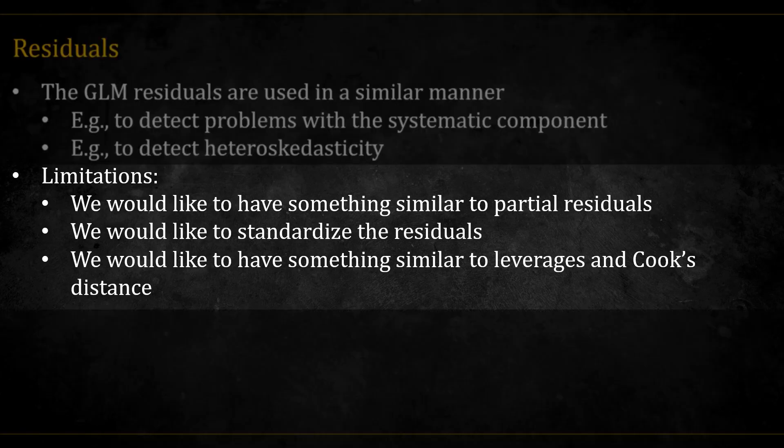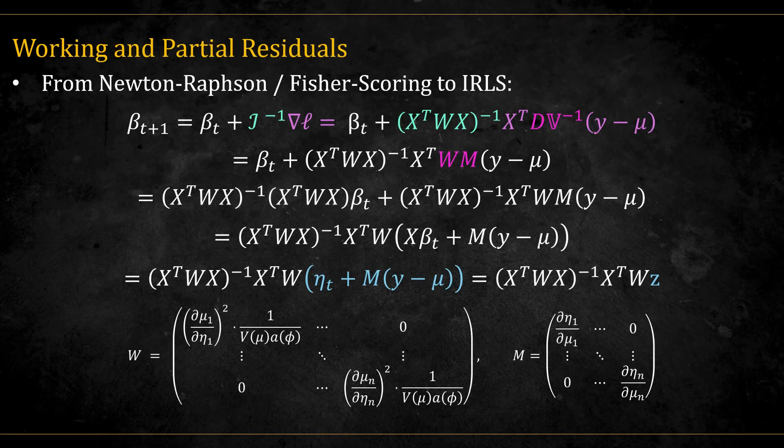So far, we don't really have a way to calculate partial residuals. We would also like to standardize the residuals, and we would like to have something similar to leverages and Cook's distance. For all of this and more, we need to adopt another useful view of the GLM regression. Remember that fitting GLMs is done using Newton-Raphson or Fisher scoring. We saw in my video about numerical solutions that this can be placed in another form, which is called IRLS, Iterated Reweighted Least Squares, whereby following this derivation here, we can see that each iteration is actually fitting a weighted least squares on some response values we denote by z.